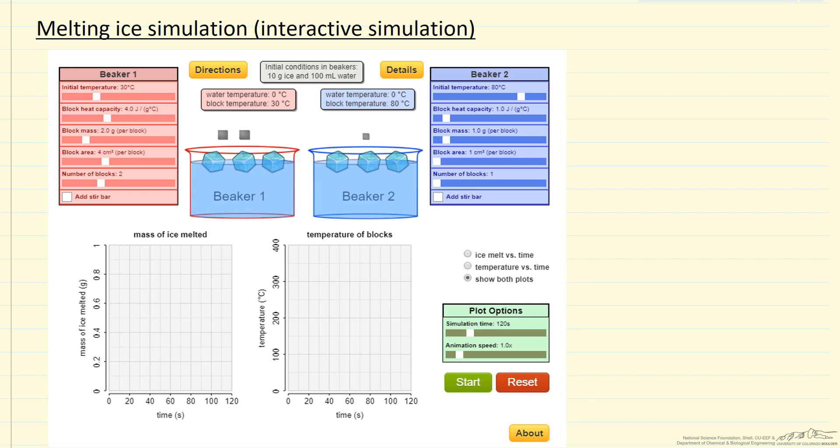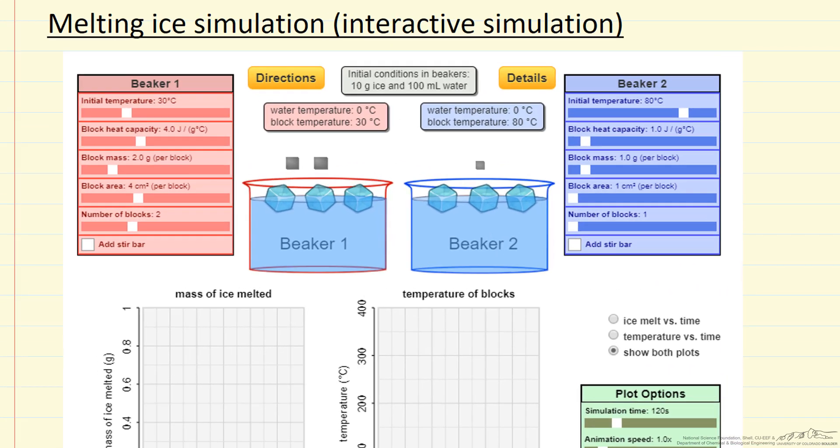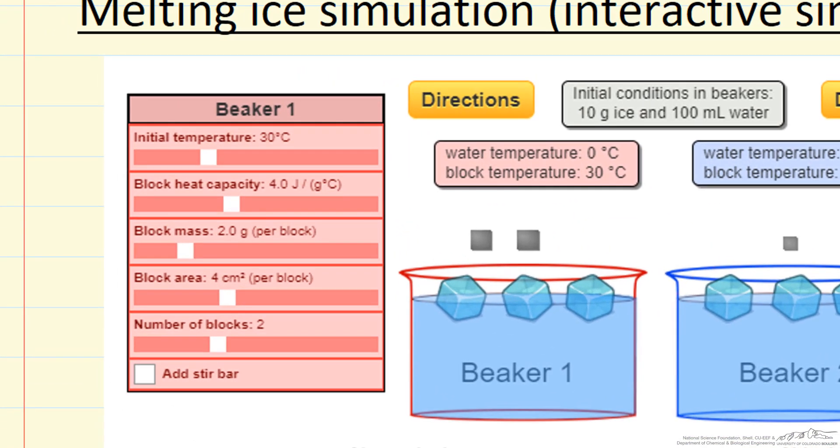And on the left side, the red beaker, we show the temperature, the heat capacity of the block, the mass of the block, the area of the block, and the number of blocks being dropped.